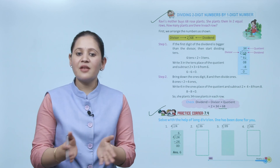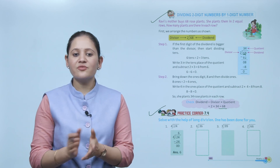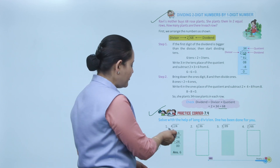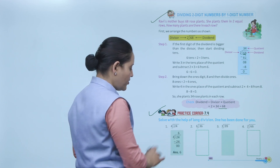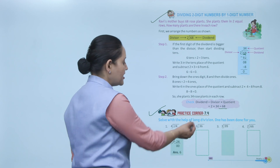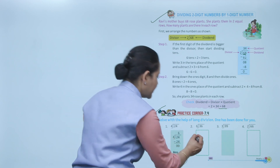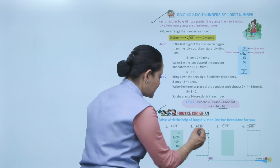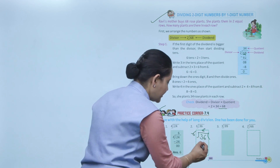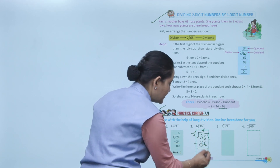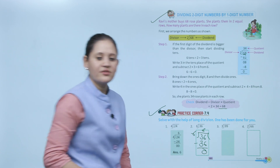Practice corner 7.4 — solve with long division: 24 ÷ 4, since 4 sixes are 24, quotient is 6. For 36 ÷ 6, write 36 in bracket with 6 as divisor; 6 sixes are 36, write 6, subtract to get 0.